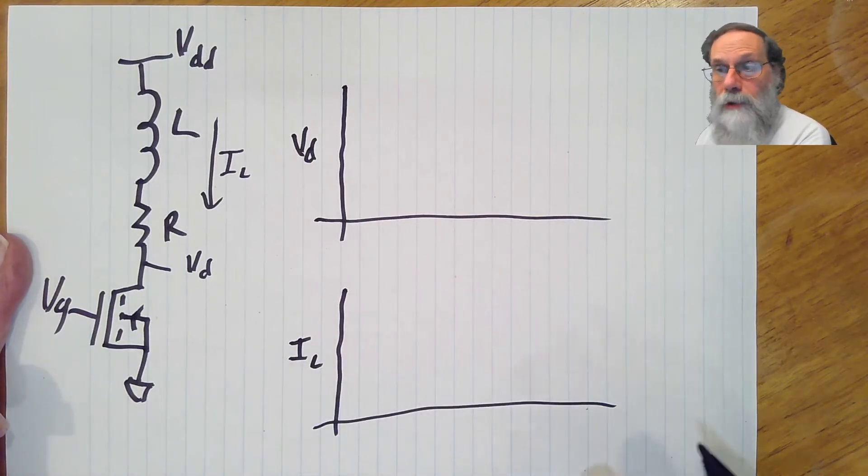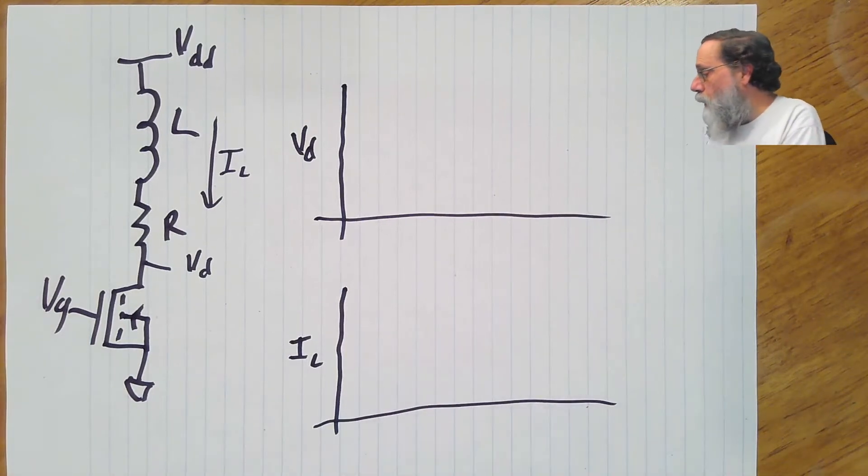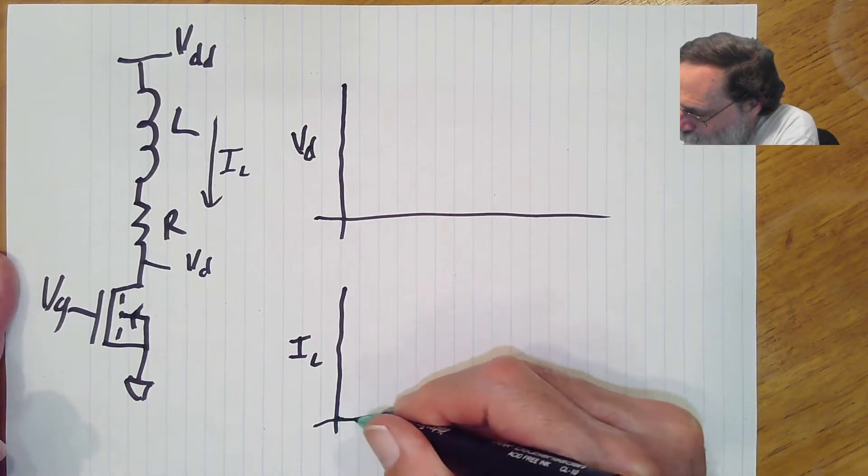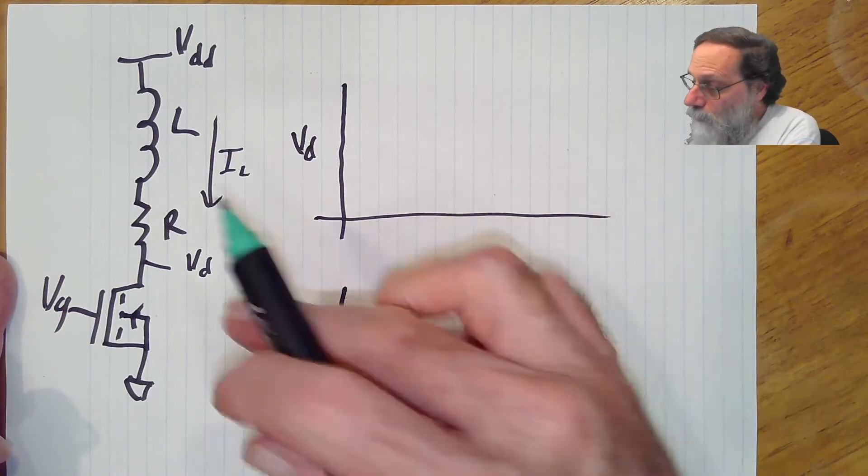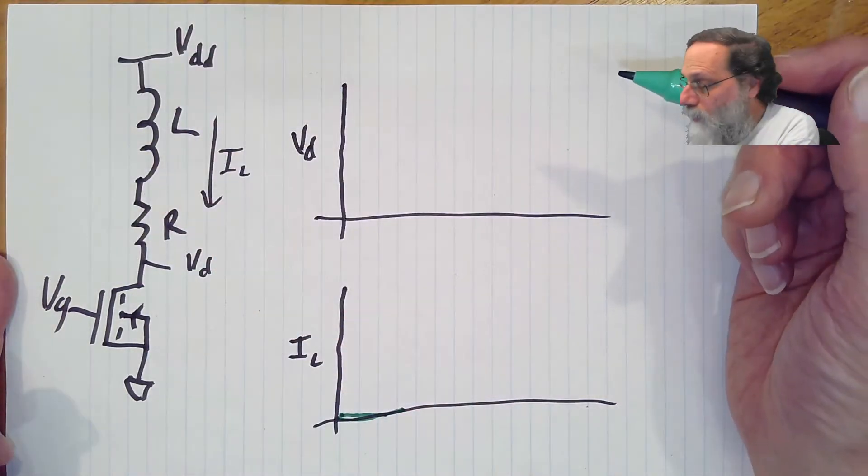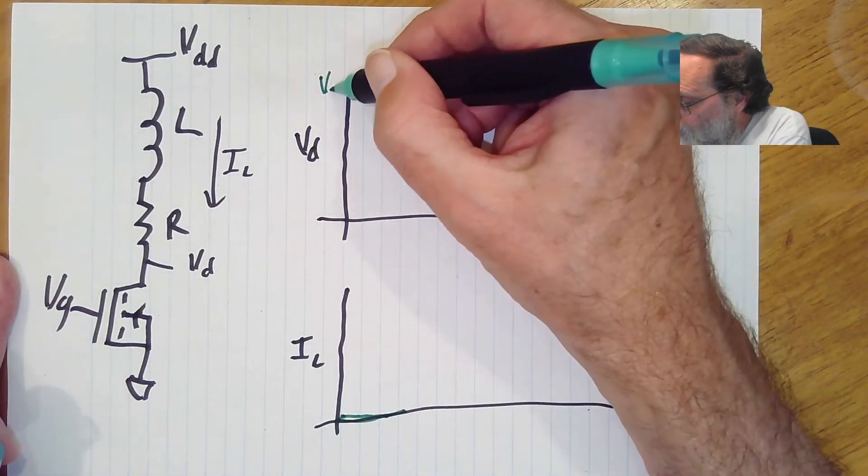We'll start with the transistor having been off for quite a while, so there's no current flow. If there's no current flow, there's no voltage across the resistor, nothing across the inductor either, and the voltage here is going to be just up at VDD.